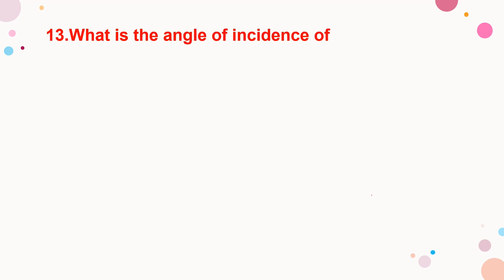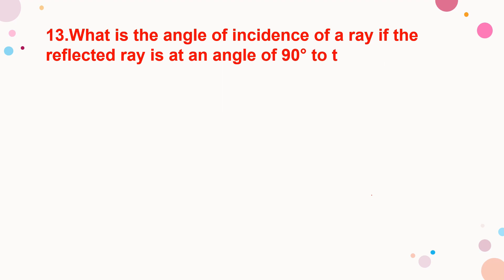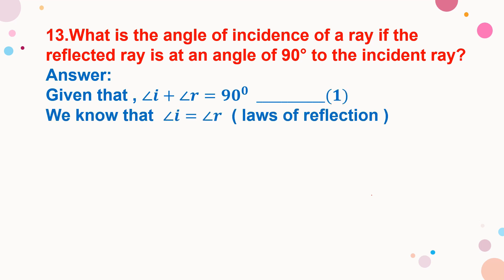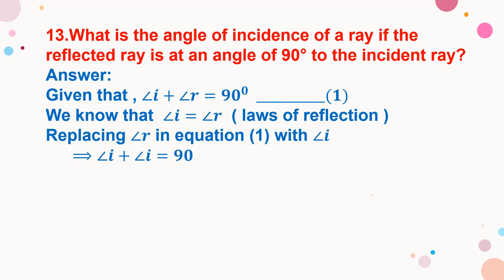Next question: What is the angle of incidence of a ray if the reflected ray is at an angle of 90 degrees to the incident ray? Given that the sum of angle of incidence and angle of reflection is 90 degrees. We know that angle of incidence equals angle of reflection by the law of reflection.